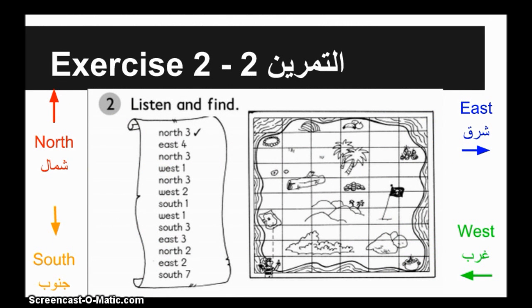North, South, East, West. هذه خريطة وفي الورقة وصف للكنز. حنبدو وين ما البايرت قاعد، خلونا نبدو.